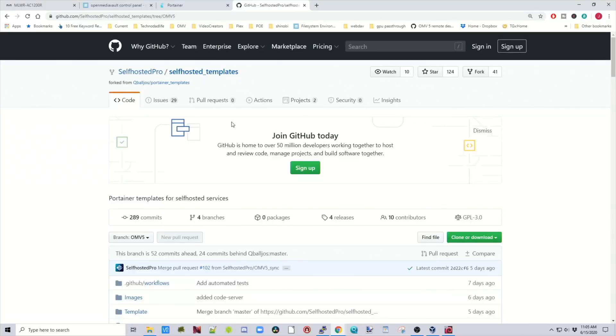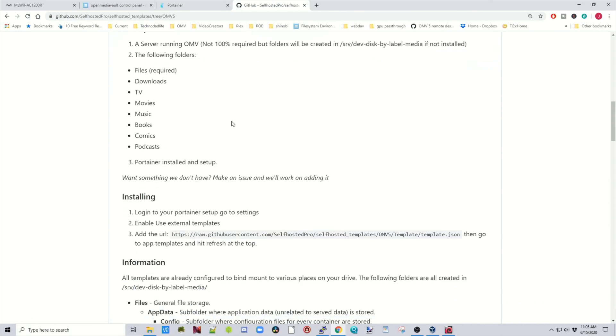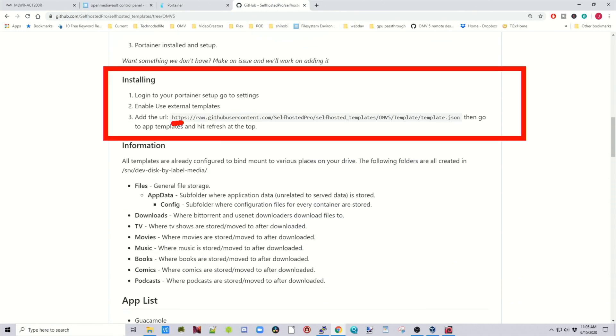So we get to Self-Hosted Pro. We scroll down. Then where it says Installing, we copy this URL.